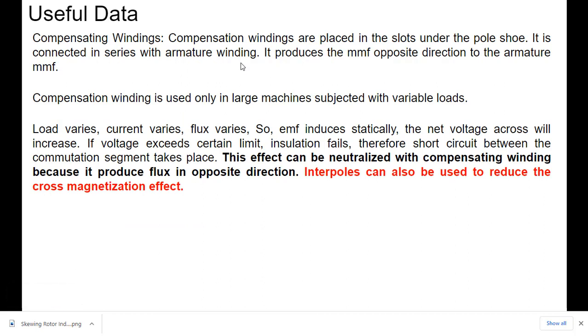Compensating windings. Compensating windings are placed in the slots under the pole shoe. It is connected in series with armature winding. It produces the MMF opposite direction to the armature MMF.